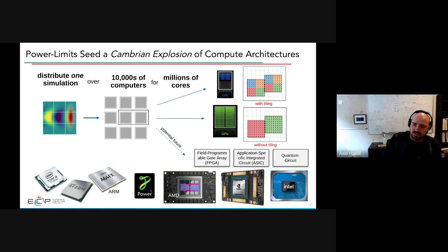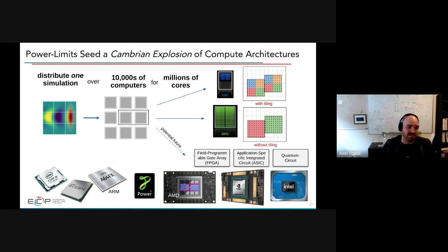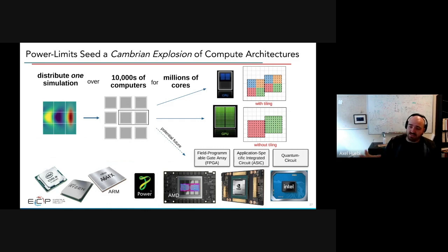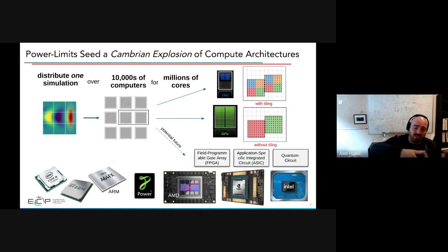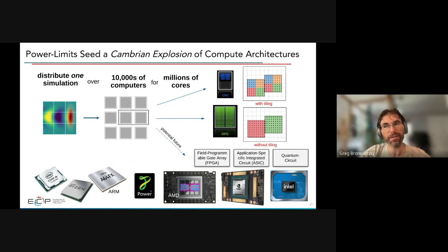Q&A on ML chips: we've explored using tensor cores for PIC. Initially precision was too low; recent chips support half, single, and sometimes double precision. The challenge is that PIC operations aren't dense linear algebra — there are many zeros, making it hard to use tensor cores efficiently. Field gathering and current deposition operations involve too many indirect memory accesses (gathers/scatters), and packing data into matrix format introduces overhead that makes it not worth it currently.